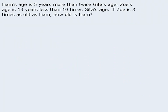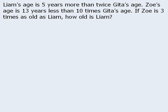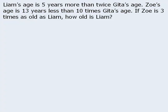Here's a new question to tackle. We are given information about the ages of three people. Notice that Liam's age is given in relationship to Gita's age, and Zoe's age is also given in relationship to Gita's age. Since Gita's age is central to the given information, let's let g equal Gita's age. The question tells us that Liam's age is 5 years more than twice Gita's age, so 2g plus 5 represents Liam's age.